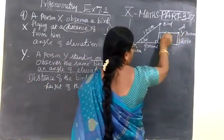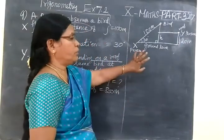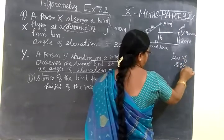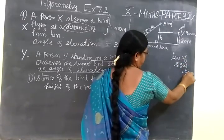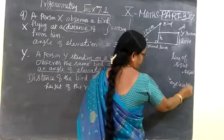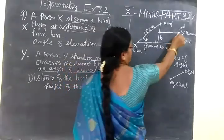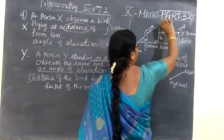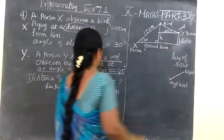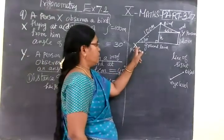Person Y observes the bird. Students find it difficult to draw the line of sight. Line of sight means joining the object and the eye level. This is eye level, this is the object — you join them and that is the line of sight. Mark the angle as 45 degrees. This is for person Y observing the bird.